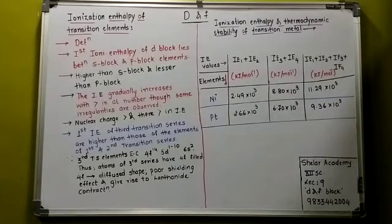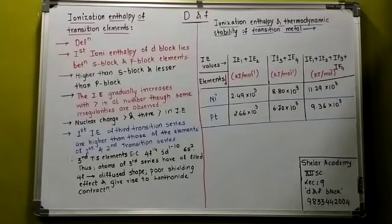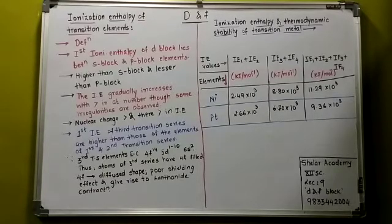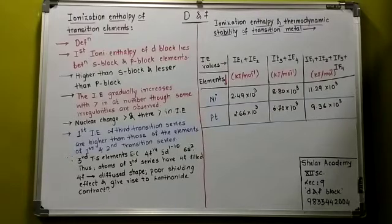The very first is the definition. What do you mean by the ionization enthalpy? It is the minimum amount of energy which is required to remove the loosely bonded electron from an isolated gaseous atom. That is called the ionization enthalpy.